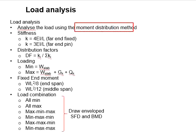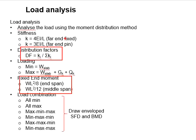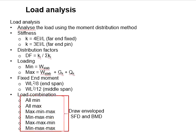For the moment distribution method, you will need to determine the stiffness of the member based on the equations given here. Then calculate the distribution factors which later the fixed end moment will be distributed in terms of the ratio for these distribution factors. And there will be various load combinations that you will need to try in order for you to produce the envelope shear force diagram and the bending moment diagram.